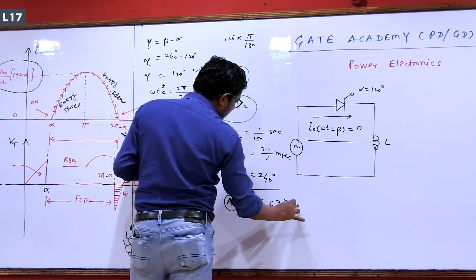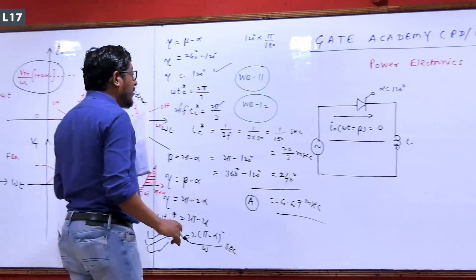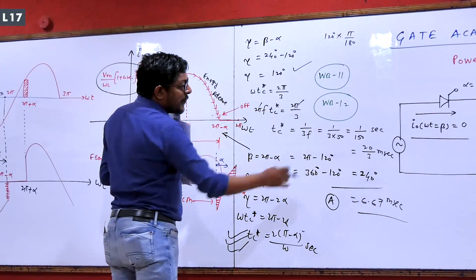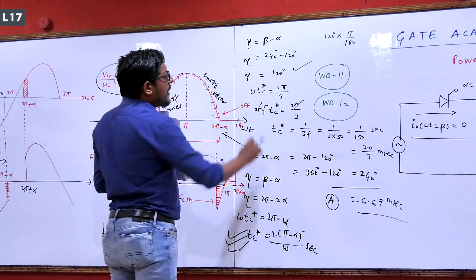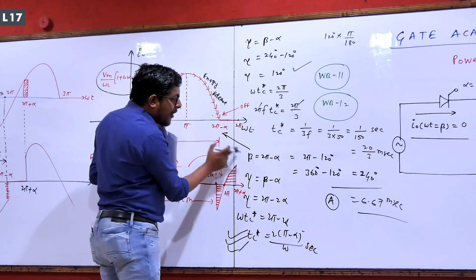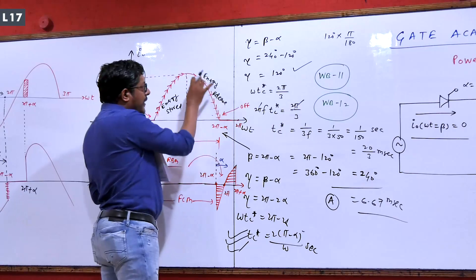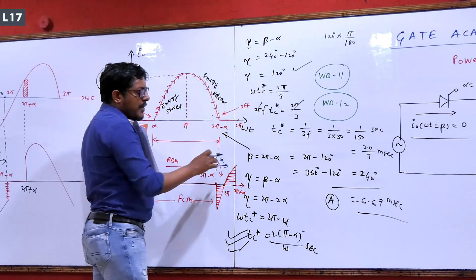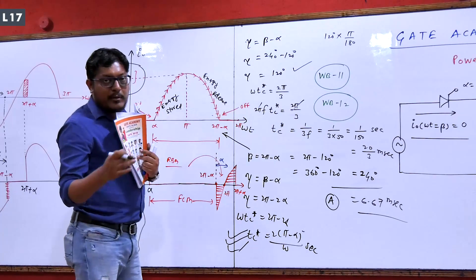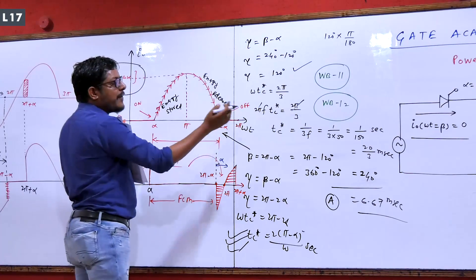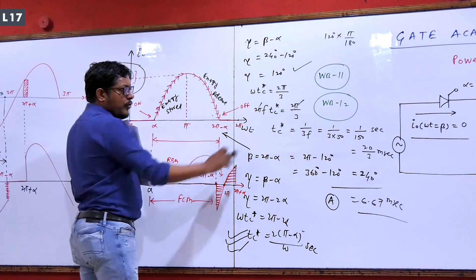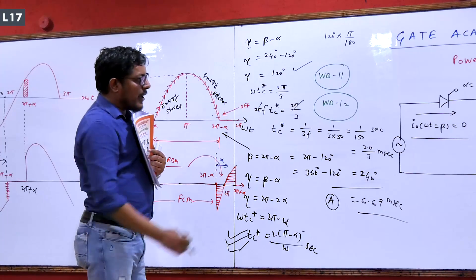That gives 6.67 milliseconds — this is the conduction time. So if someone asks the conduction time, the answer is 6.67 milliseconds. If someone asks the conduction angle, it is 120 degrees. If someone asks the extinction angle — the angle at which the inductor current is zero, which defines discontinuous conduction — that is 2π minus alpha, so 2π minus 120 equals 240 degrees. The answer is 240 degrees.